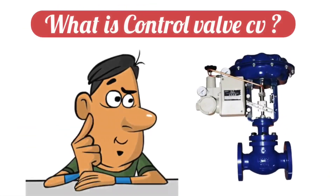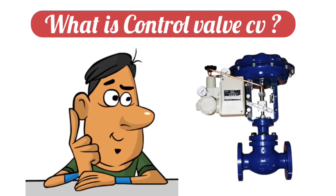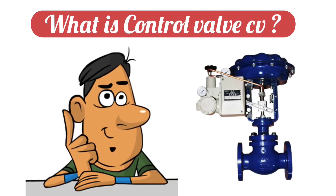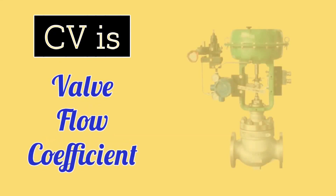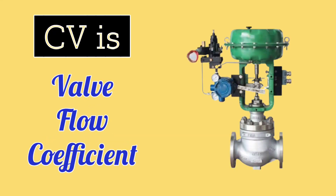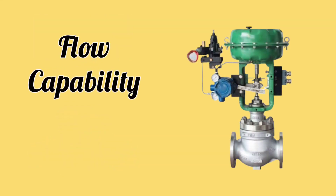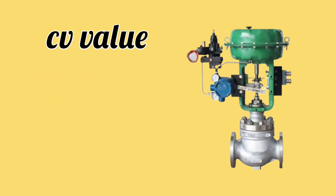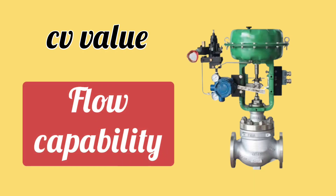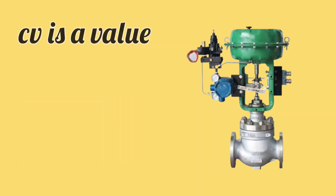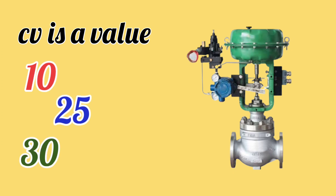What is control valve CV? Friends, if understood in simple language, CV is called the valve flow coefficient — meaning it tells the flow capability of the valve. The higher the value of CV, the higher will be the flow capability. CV is a value, such as 10, 25, or 30, and it does not have any unit.